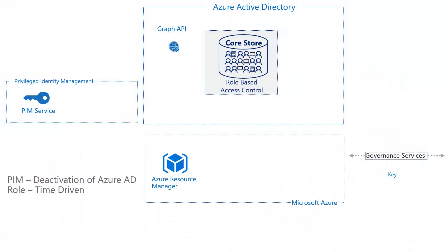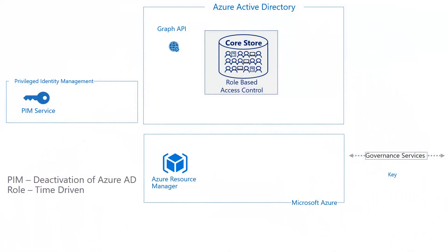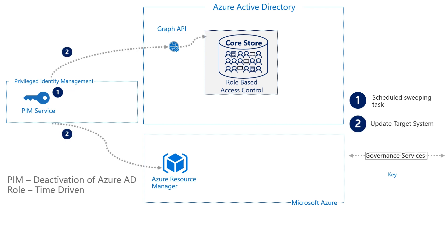What happens if the user goes to grab coffee and forgets to deactivate? We actually have a scavenging-type background job that runs to find any outstanding roles that are past due. Let's say the window is eight hours and time's up. In step one, the scheduled sweeping task wakes up and picks up all due role assignments from the PIM tracking database. In step two, a worker process then updates the target system as well as the PIM tracking database to deactivate the roles. This workflow runs once every 30 seconds.